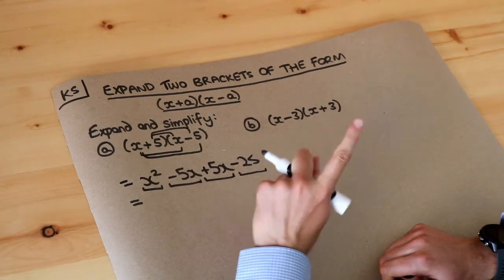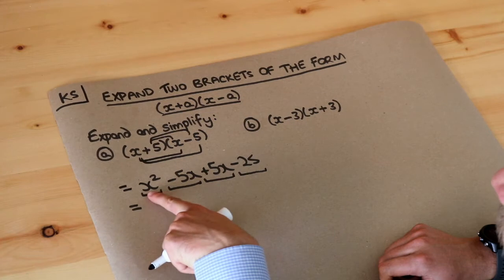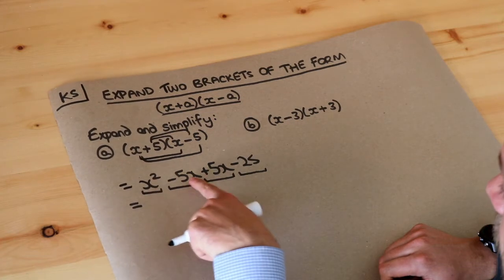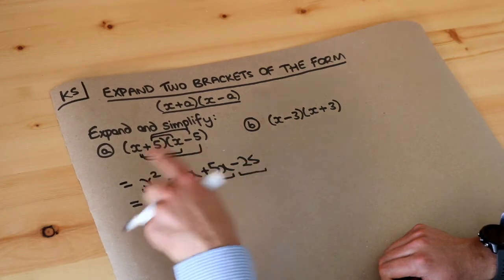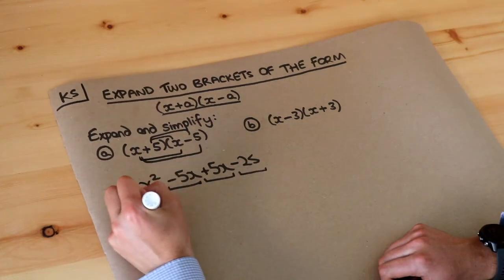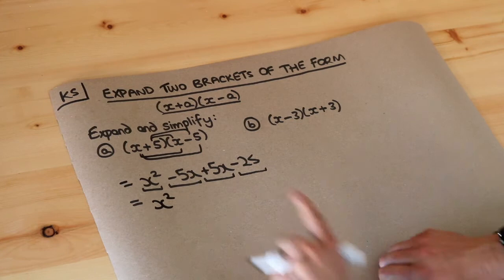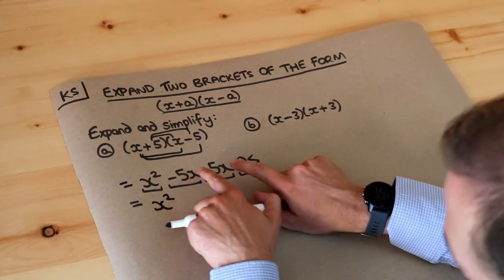Now terms are like terms if they involve the same variables and the same powers. So this is an x² term. Now these are both x terms but they're not x² terms, they don't involve the same power. So that's the only x² term, so that's just going to be x². Now these are both x terms without that power of 2, so we can collect these together.